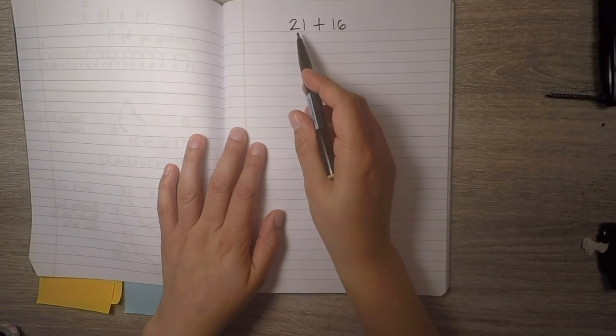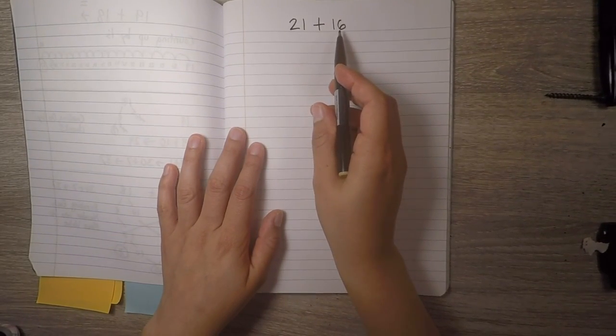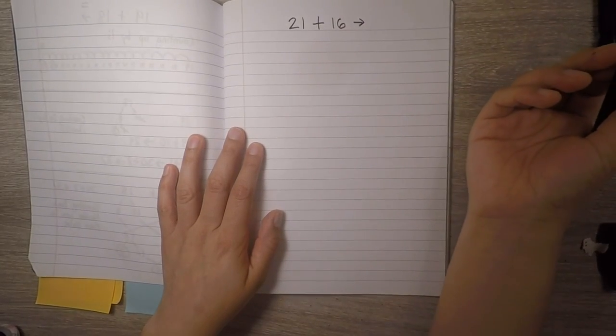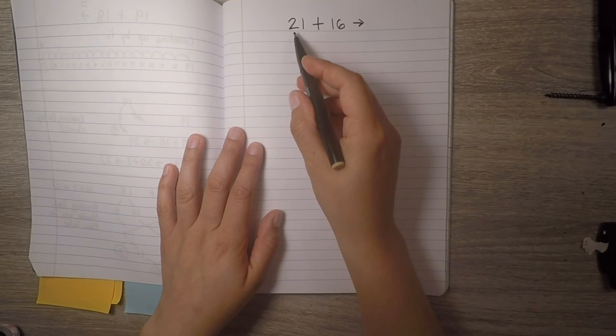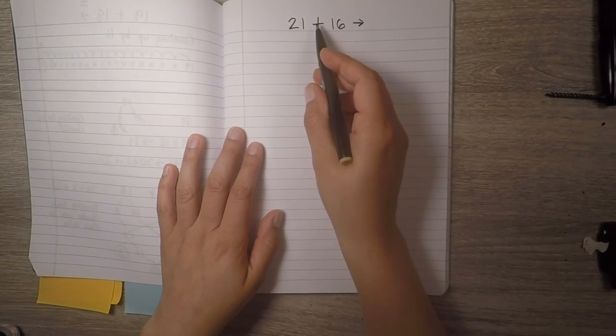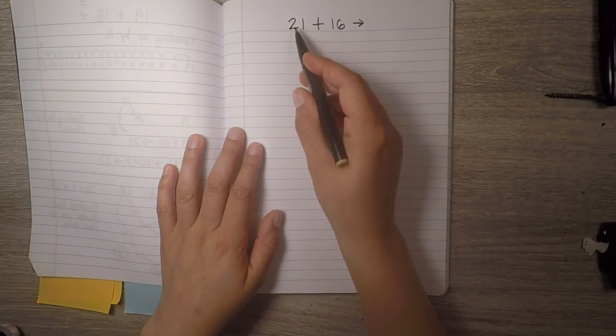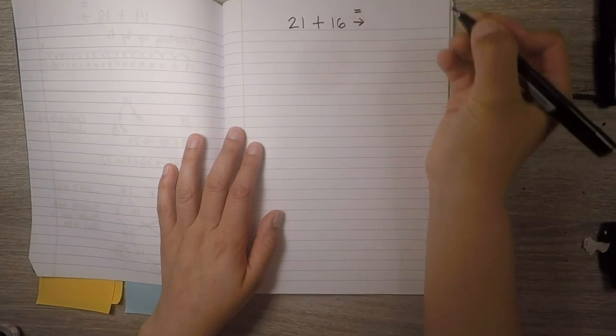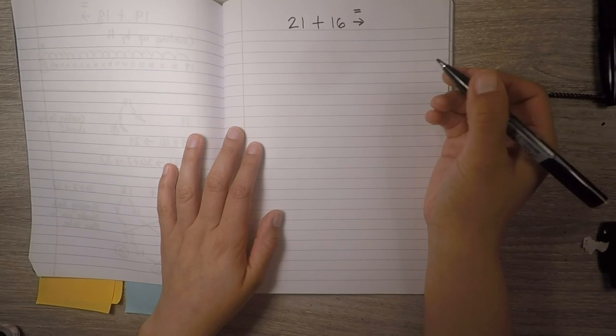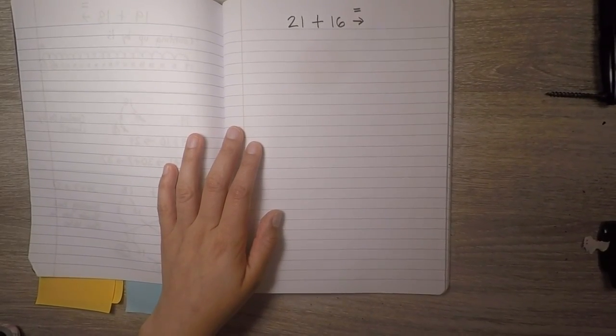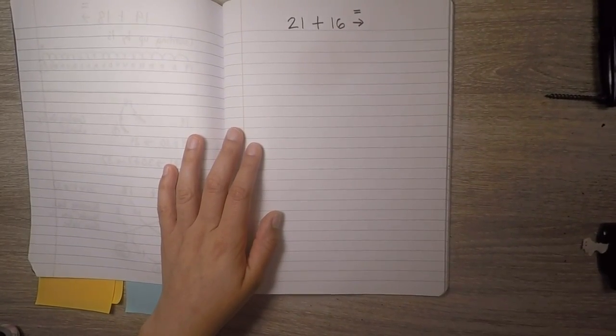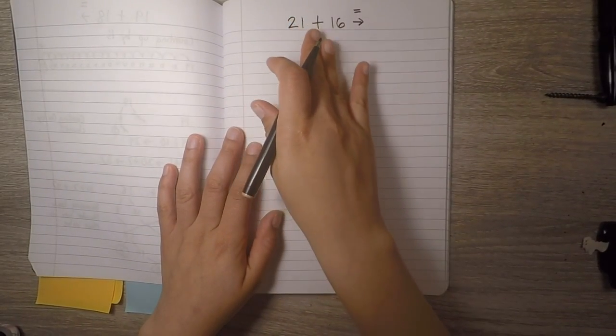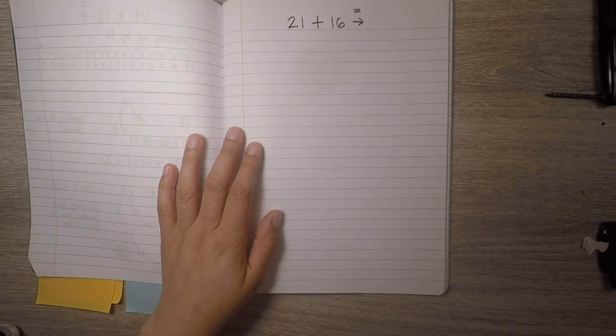Let's first read the number sentence. 21 and 16 leads to, or another way we can say it might be 21 plus... 21 add 16 equals. When we're reading number sentences there are lots of ways that we can read them. So whatever way you feel like reading the number sentence, as long as it makes sense with what we see on paper, go ahead and read it that way.